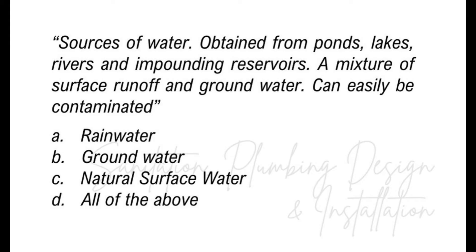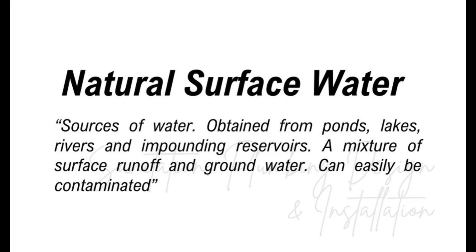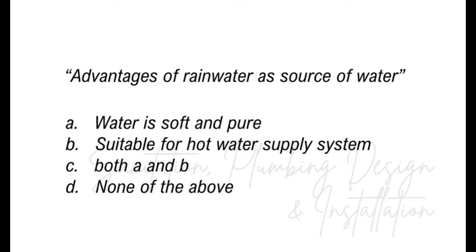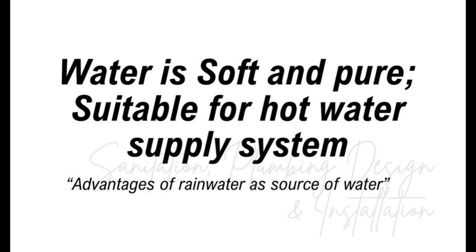Sources of water — it is obtained from ponds, lakes, rivers, and impounding reservoirs. It is a mixture of surface runoff and groundwater and can easily be contaminated — A, rainwater; B, groundwater; C, natural surface water; D, all of the above? The answer is natural surface water. Which of the following is the advantage of rainwater as a source of water? A, water is soft and pure; B, suitable for hot water supply system; C, both A and B; D, none of the above? The answer is both A and B — water is soft and pure, and it is suitable for hot water supply systems.